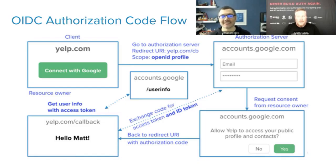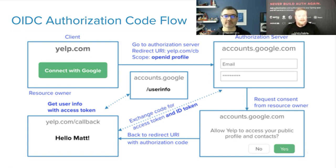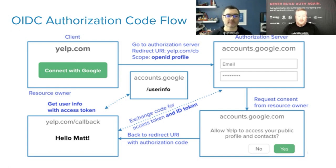Some background on OAuth: back in 2005-2006, when you signed up for Yelp or LinkedIn, at the end of the sign-up flow it would prompt you to add friends and ask for your Gmail username and password. People would just type them in because they trusted Yelp and LinkedIn, but there was no guarantee those credentials weren't kept. This led to wanting delegated authorization — giving Yelp access to your contacts without giving them your credentials. That's where OAuth came about.